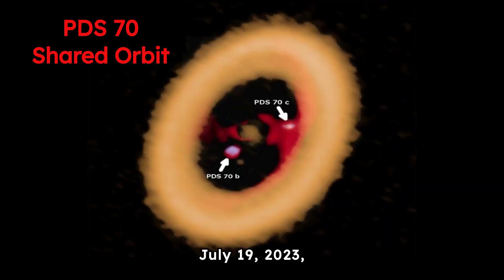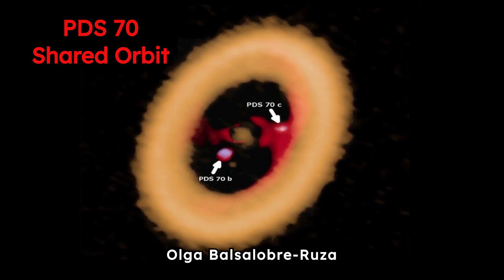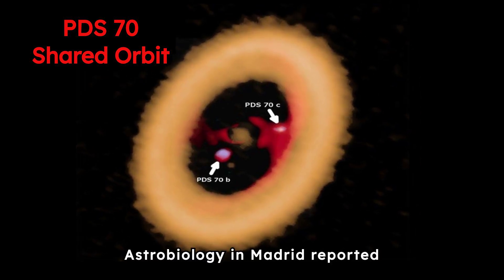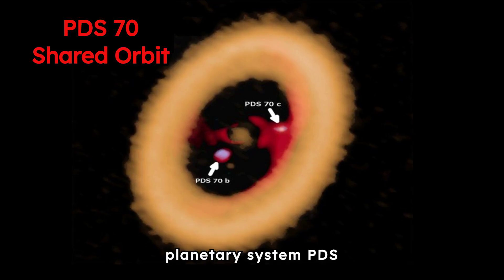On July 19th, 2023, a team of Spanish scientists led by Olga Balsalobre-Ruza from the Center of Astrobiology in Madrid reported observing the young planetary system PDS-70.